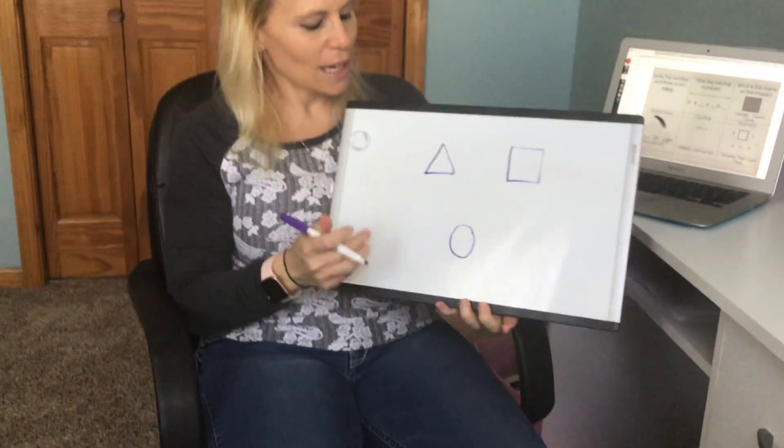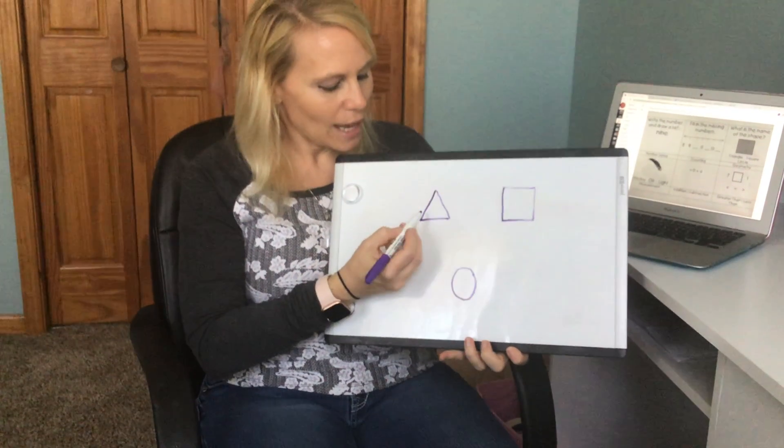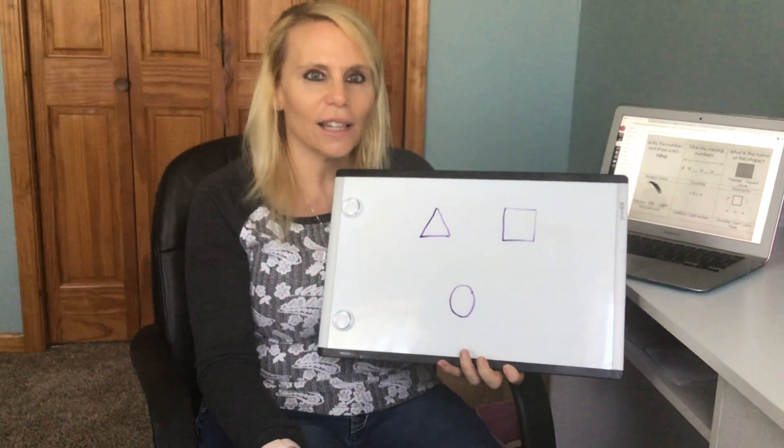The first one says triangle. Well, a triangle has one, two, three sides and looks like this.